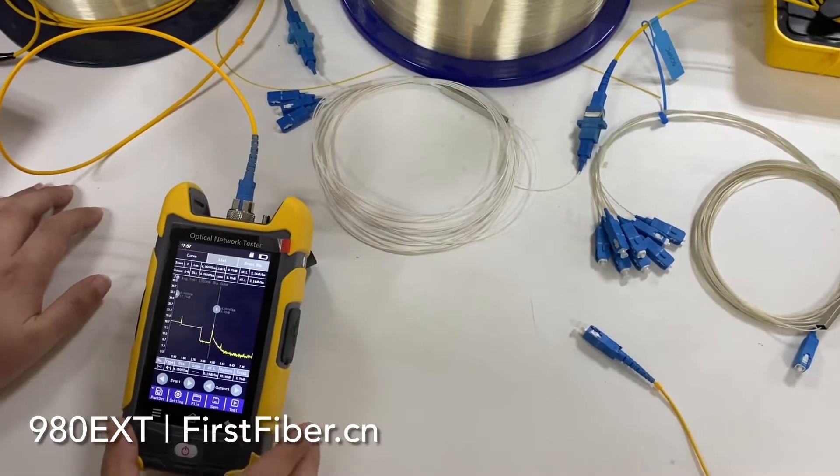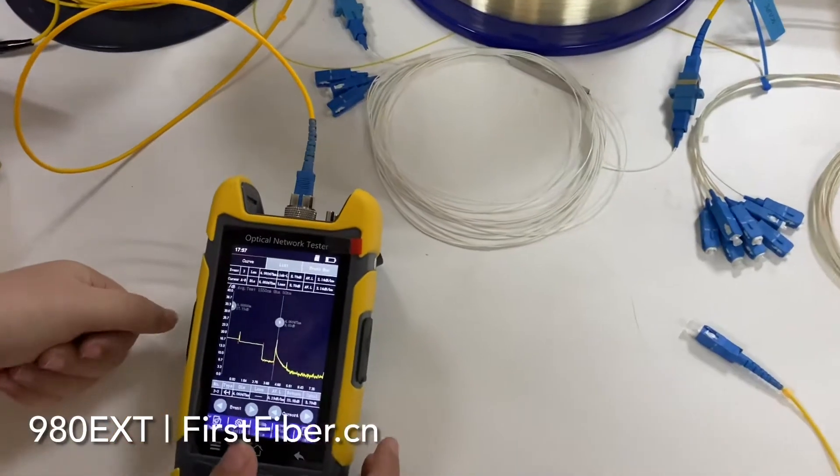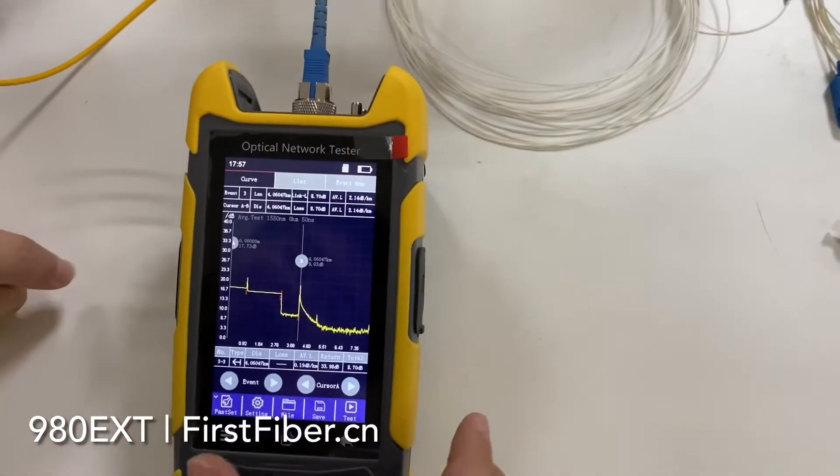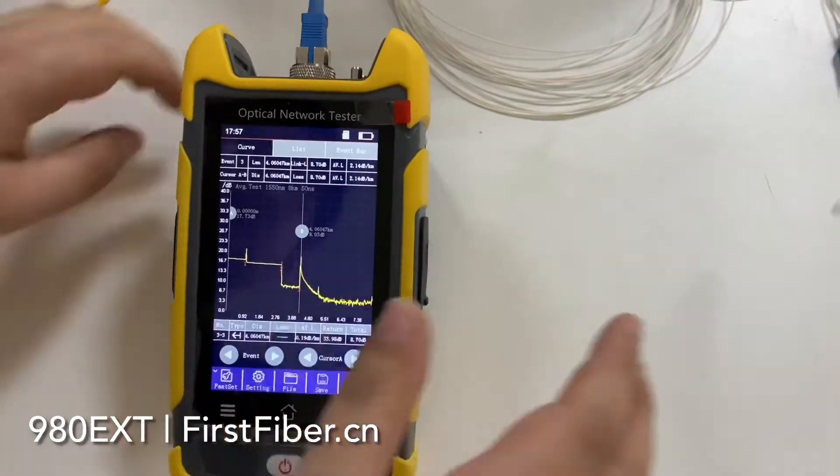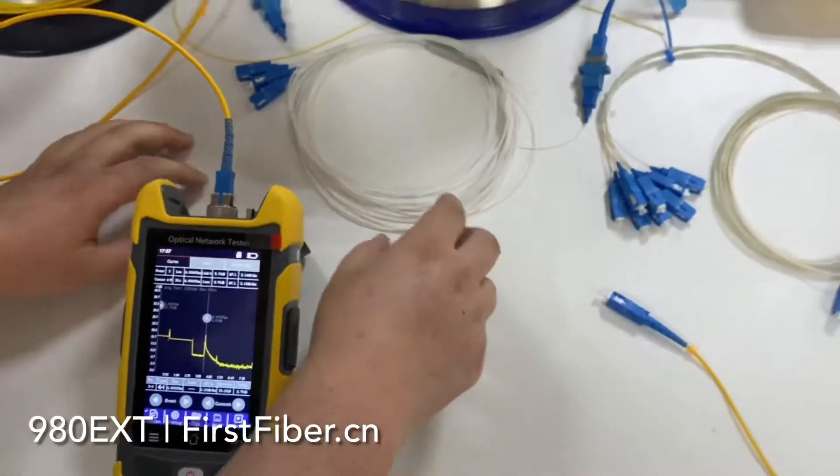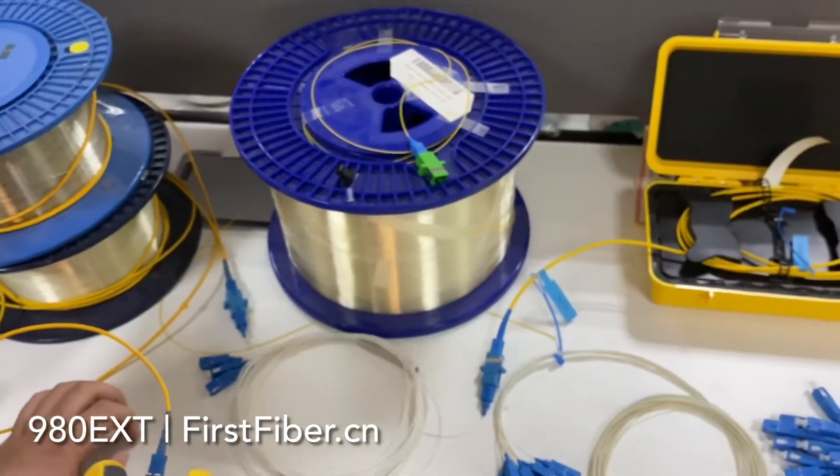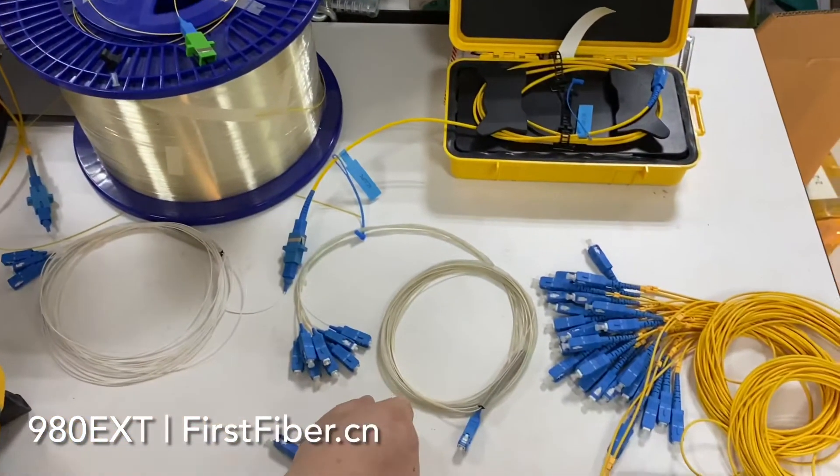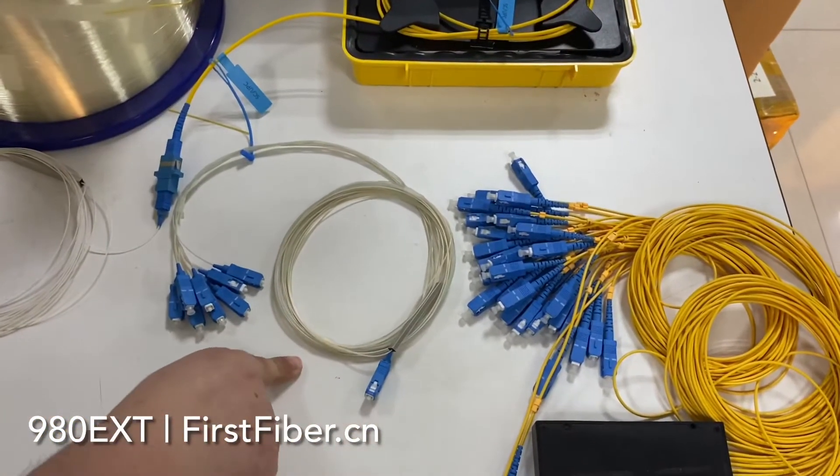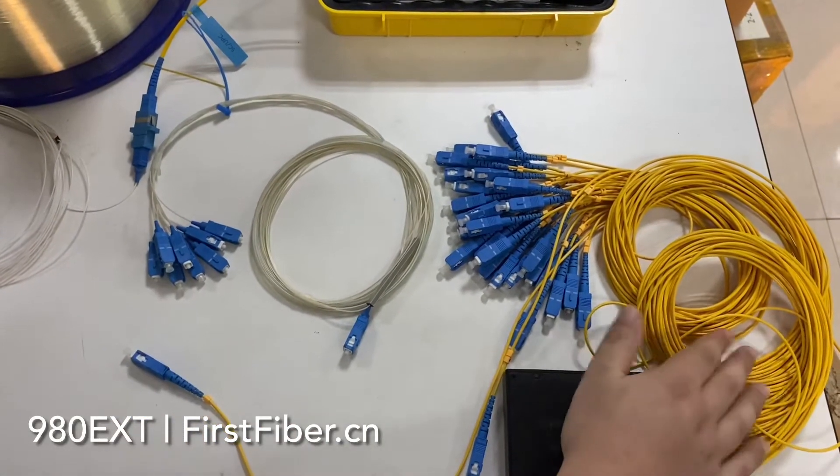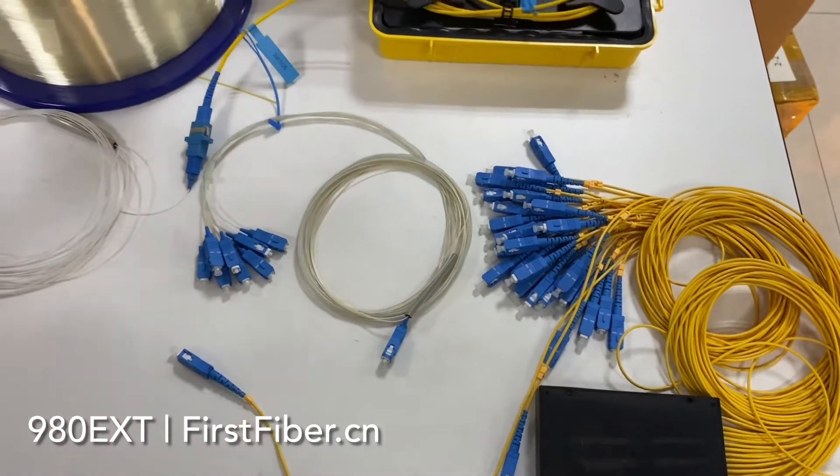But today I want to use this Mini-OTDR to make a challenge to test the fiber splitters. As you can see, I have 4-channel splitters, 1-8-channel splitters, and 1-32-channel splitters.